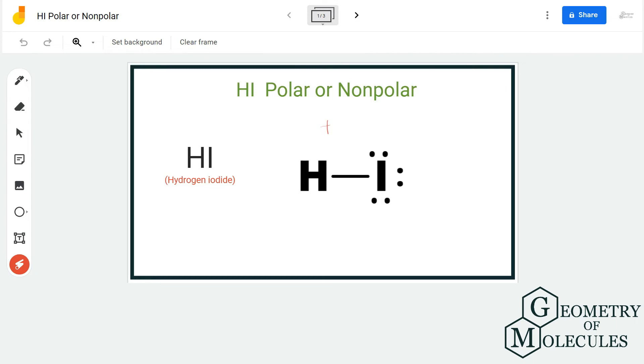Due to this dipole moment, there will be uneven distribution of charges where the region around the hydrogen atom will be partially positive in nature, whereas the other region will be partially negative.